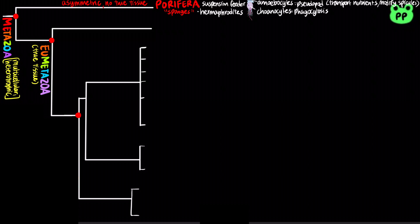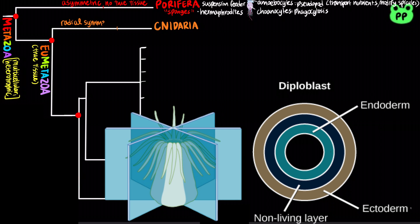The phylum Cnidaria is one of the oldest groups in Eumetazoa. They are radially symmetric and diploblastic, meaning their tissues develop from only two embryonic layers: the ectoderm on the outside and the endoderm on the inside.